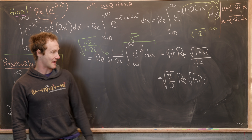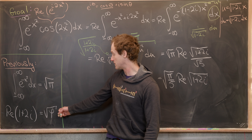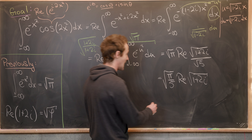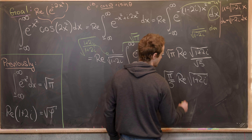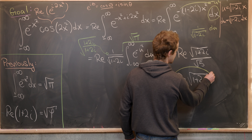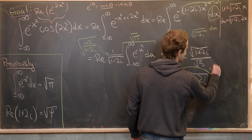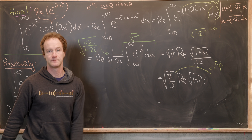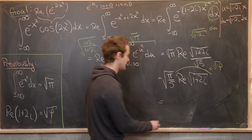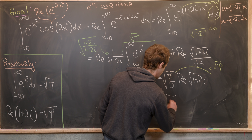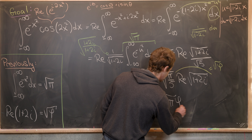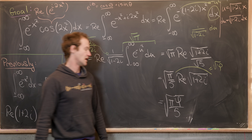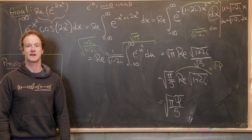By that previous video, we know that the real part of the square root of 1 plus 2i is the square root of phi. So we can replace this entire thing with the square root of phi. Putting it all together, we have the square root of pi times phi over 5, and that's a good place to stop.